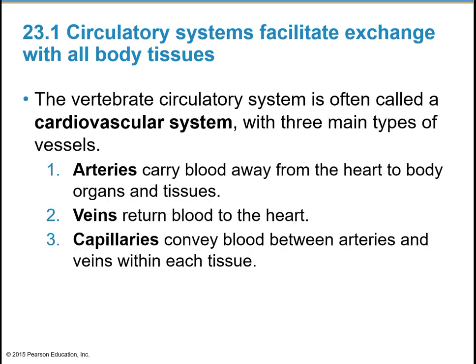The vertebrate circulatory system is often called a cardiovascular system, with three main types of vessels. We have arteries, and we can remember arteries by remembering 'arteries carry away' — artery starts with A, away starts with A. So arteries carry blood away from the heart, out to the body, organs, and tissues.